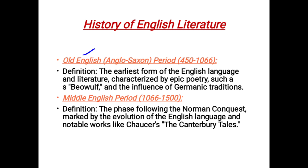The first period is Old English. At that time it was also called Anglo-Saxon. Anglo-Saxon is actually a tribe, and it started from 450 to 1066. Its definition is the earliest form of the English language and literature, categorized by epic poetry.